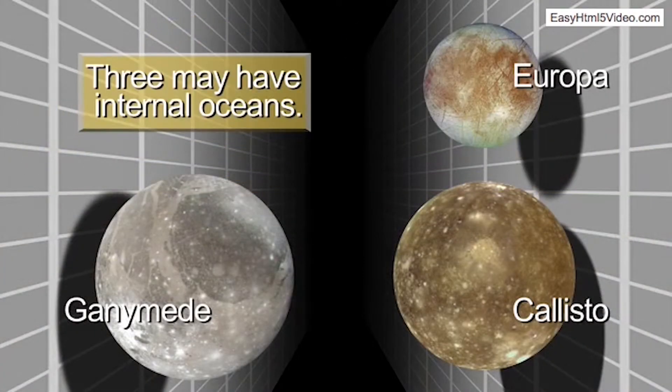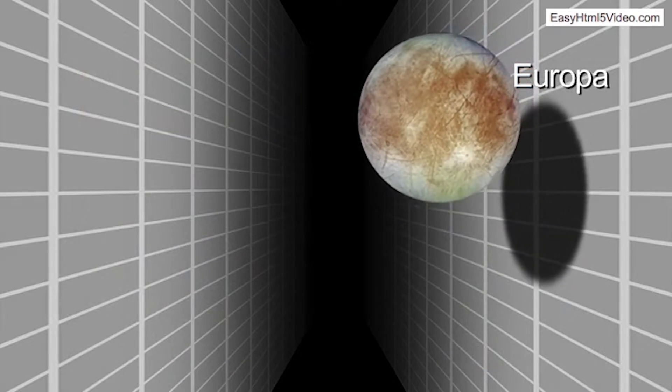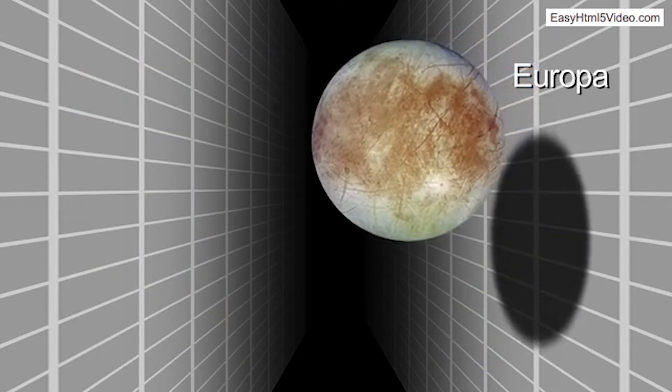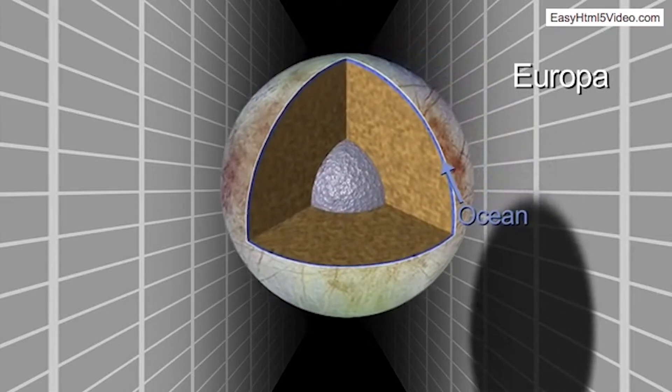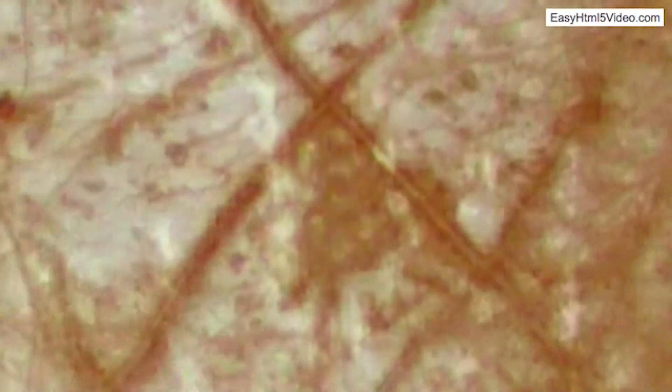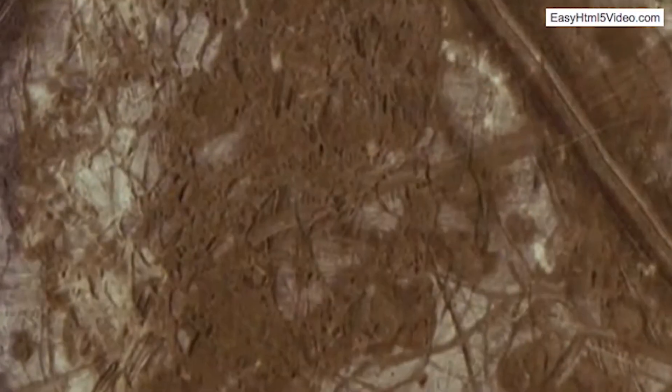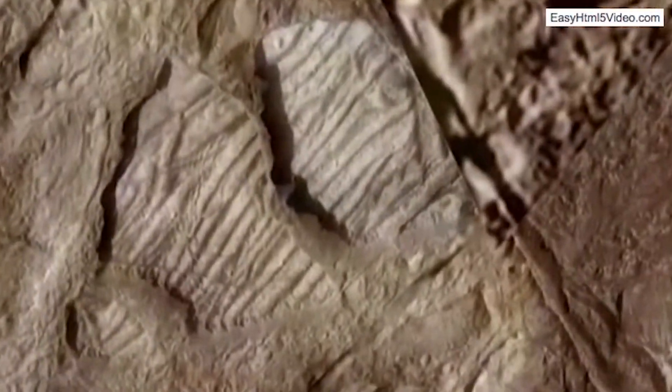The subsurface oceans are certainly the key driver for exploration of these worlds. Europa is a fascinating place with an ocean that might be only tens of kilometers below the surface and may communicate actively with the surface through eruptions, through icy convection, blobs of warm ice moving up to the surface, through cracking, breaking of the ice. So there could be signs on the surface of what's going on.